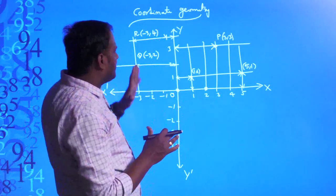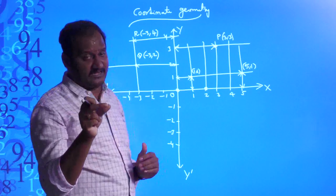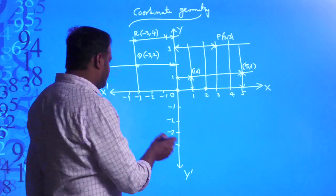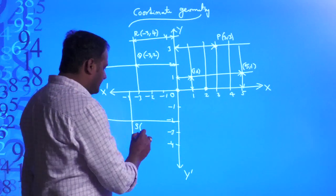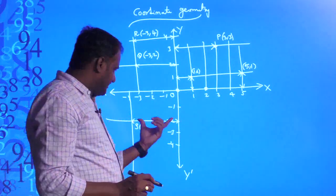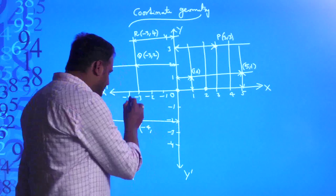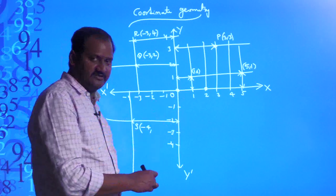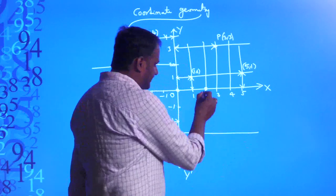In the third quadrant, I draw perpendicular lines from negative 4 on the x-axis and negative 2 on the y-axis. Let this point be S. The horizontal distance of point S from the y-axis is negative 4, and the vertical distance from the x-axis is negative 2. So the coordinates are (−4, −2). Now drawing a horizontal line through negative 3: let this point be T.